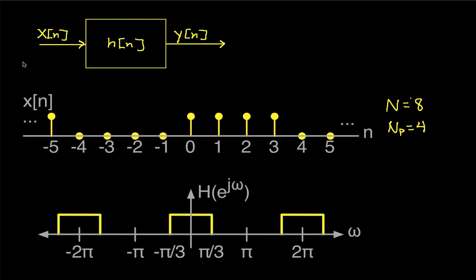The idea is that we have a system whose input x[n] is a periodic square wave. It has a value of 1 for 4 samples, then a value of 0 for 4 samples, repeating. We'll assume the system, represented by impulse response h[n] and corresponding frequency response, is an ideal low-pass filter with a cutoff frequency of π/3.